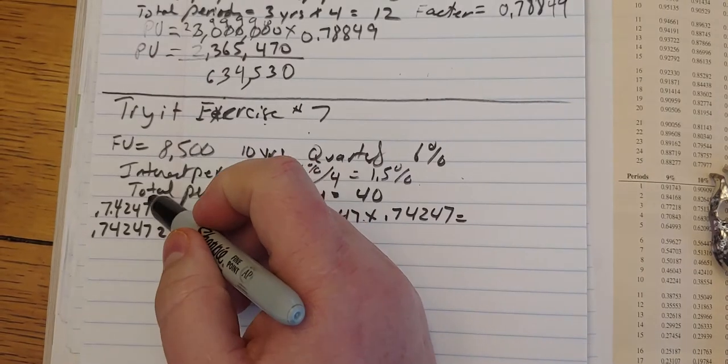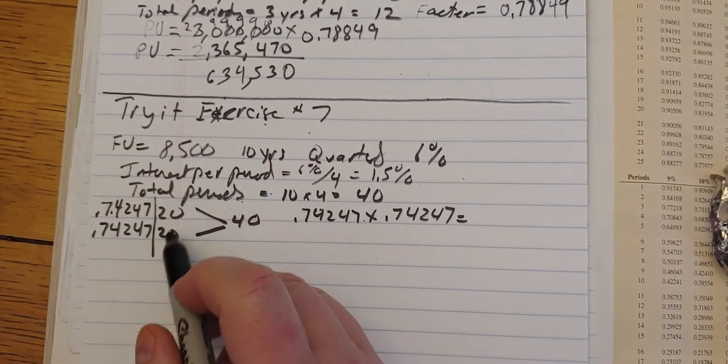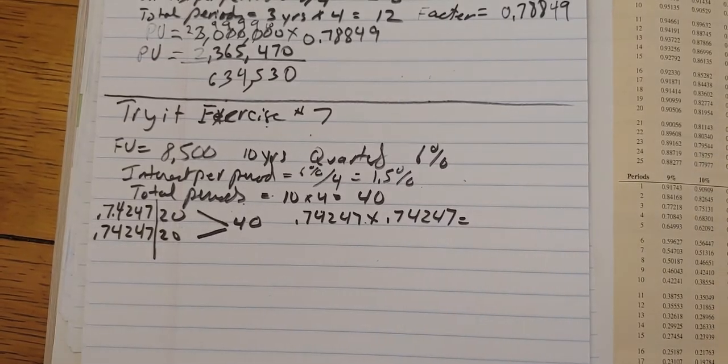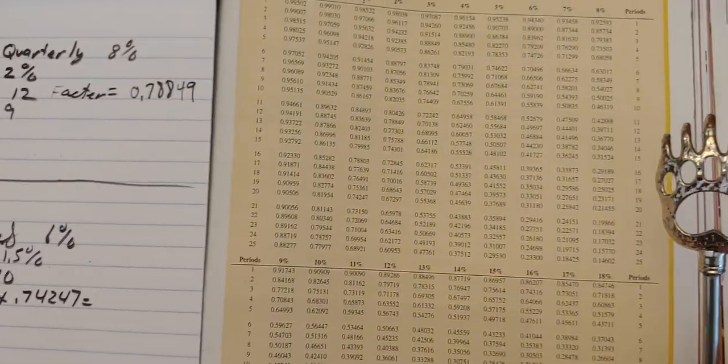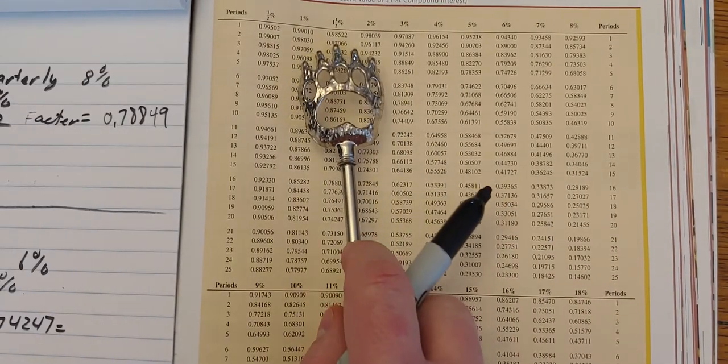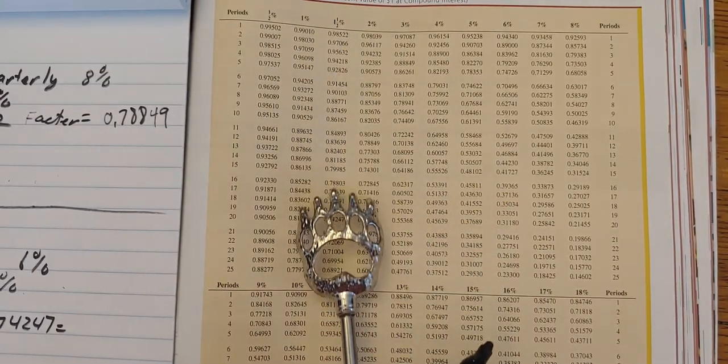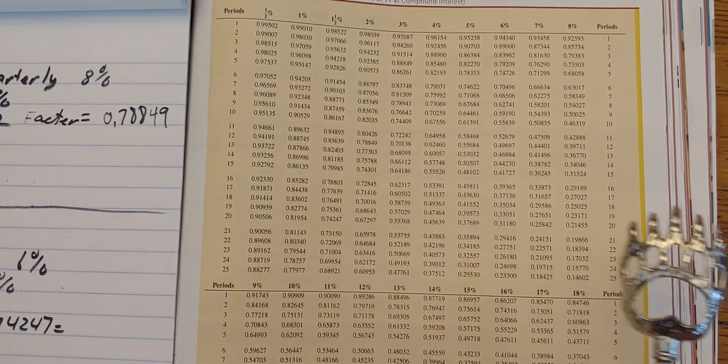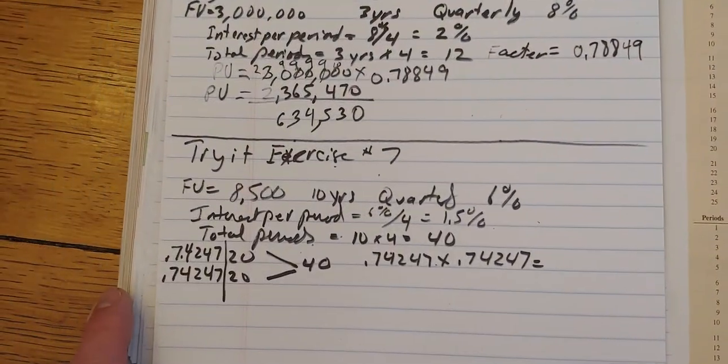I'll draw a line here to kind of break that apart. So 20 plus 20 equals 40. So I look at on the chart 20 periods at 1.5%. All right, so there's 1.5. 20 periods is down here. So 0.74247. That's what I'd written down here.